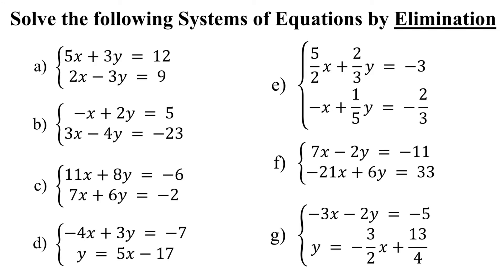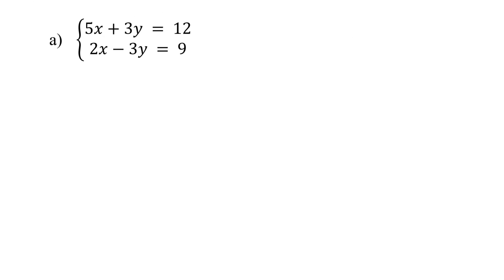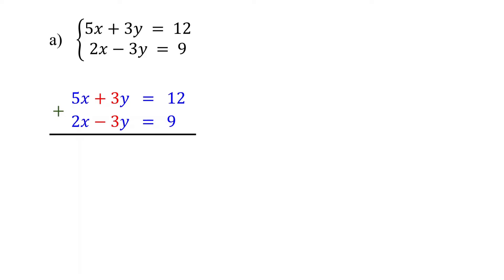To solve a system of equations with the elimination method, we will add the equations together to eliminate one variable with opposite coefficients. In this example, the y variable has opposite coefficients. In the first equation, its coefficient is positive 3; in the second equation, it is negative 3. When we add these two equations, y will be eliminated because 3y plus negative 3y equals 0. That's why it's called the elimination method.